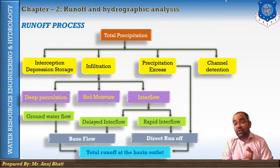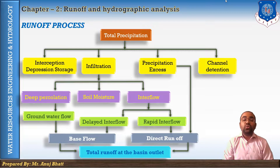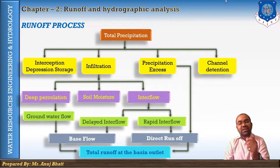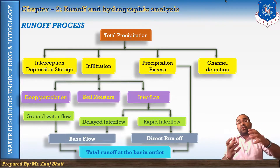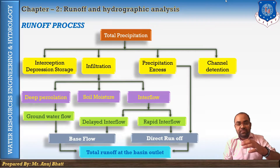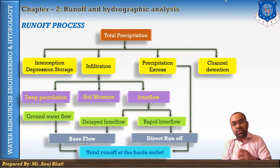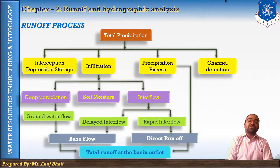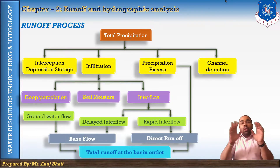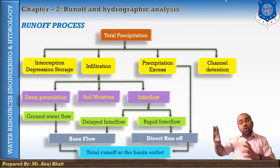The water that percolates to the groundwater table and then after a long time joins the river or stream is known as base flow. This kind of flow generally occurs when there is very low rainfall, so that small amount of water takes much time to infiltrate into the soil surface and is stored in the ground — that is known as base flow.